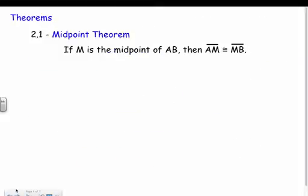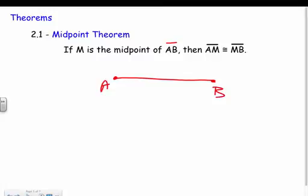Our first theorem is the Midpoint Theorem, and this should make sense: if M is the midpoint of AB, then AM is congruent to MB. Basically, if you have a segment AB and M is the midpoint smack dab in the middle, then AM is congruent to MB. That should make sense — if it's right in the middle, those two should be congruent. Remember, that symbol means congruent.